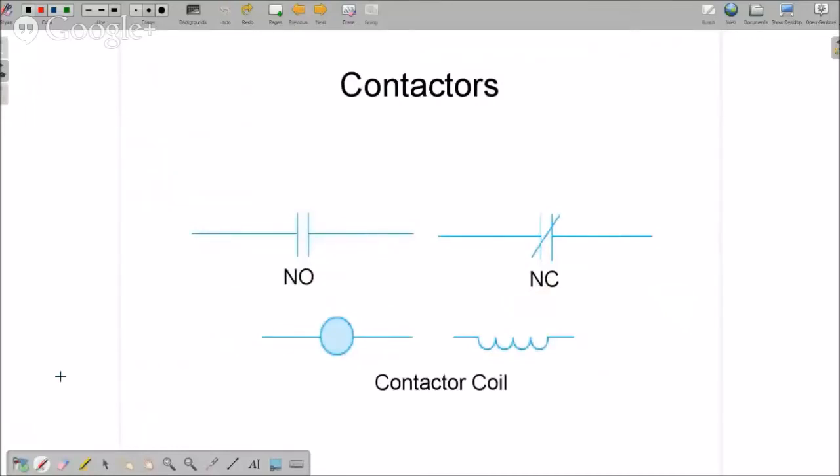I want to discuss contactors. There are a couple different components, and some of them have more than just these. The first thing is a contactor coil, which can be indicated in a schematic diagram with a circle symbol. This one doesn't have a legend, but sometimes it'll have a C, and then down in the legend it will show C equals contactor coil.